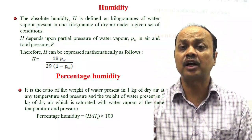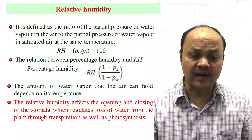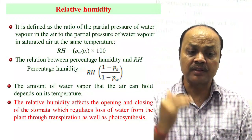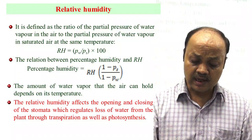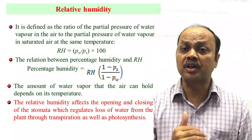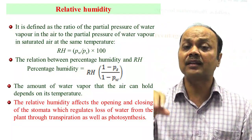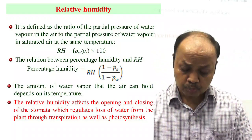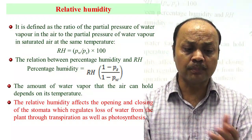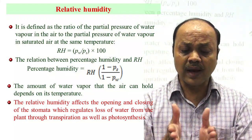Relative humidity is simply defined as the ratio of partial pressure of water vapor in the air to the partial pressure of water vapor in saturated air — that is Pw by Ps. So actual humidity h divided by saturated humidity h-s corresponds to Pw by Ps. If you know Pw and Ps, you can calculate relative humidity as well as percentage humidity.